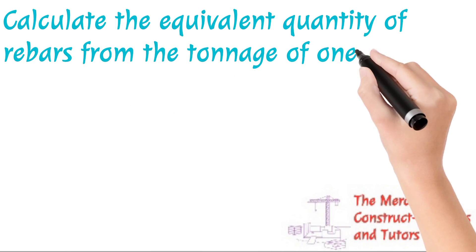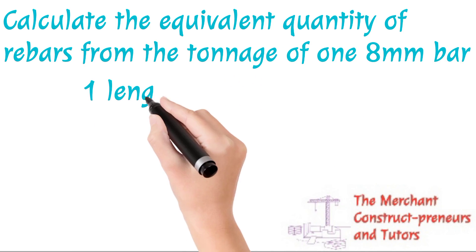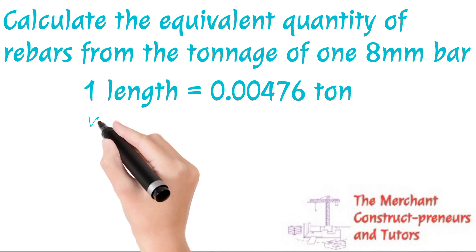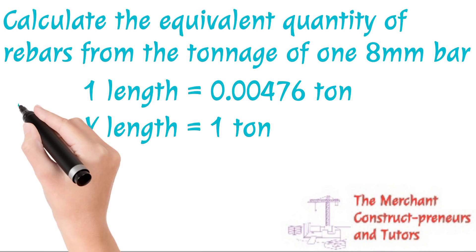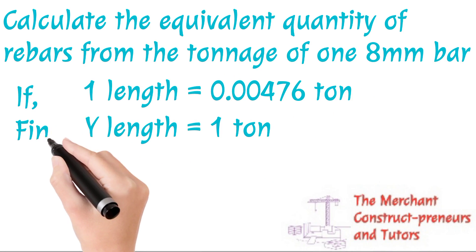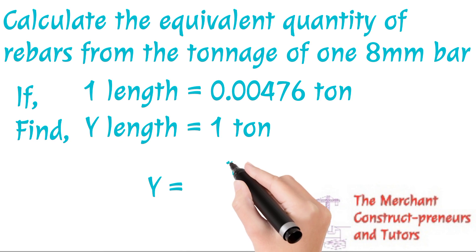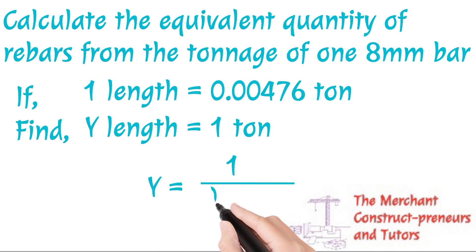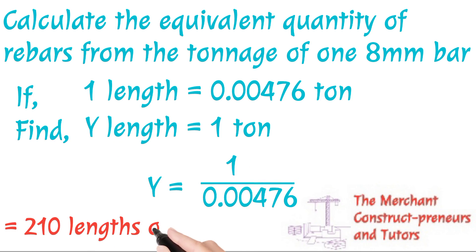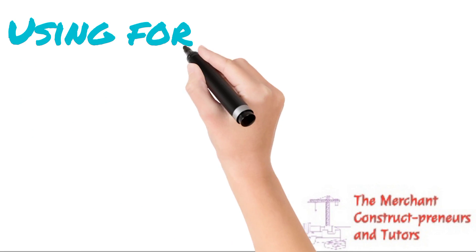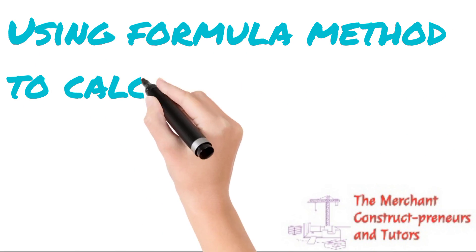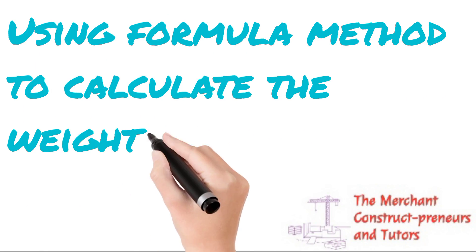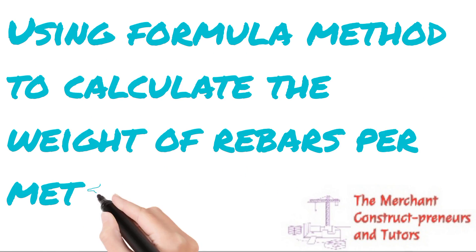I hope we are following. So now, since we have gotten the value of one length of 8mm reinforcement in tonnage, we've converted to tonnage. Now I want to know how many of these 8mm reinforcements will give you one tonnage. If one length gives 0.00476 tons for 8mm, how many lengths will give you one tonnage? So calculating this, we have it as 210 lengths of 8mm. I hope we are following. This is something that once we calculate, we are going to get our values.